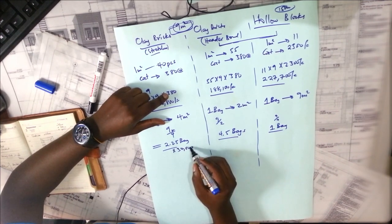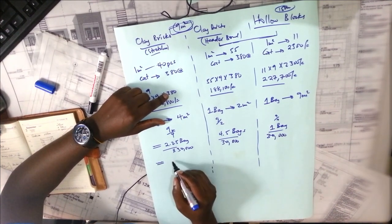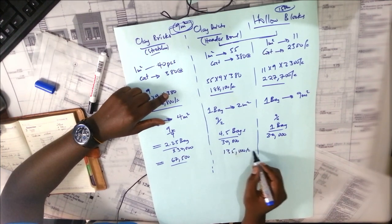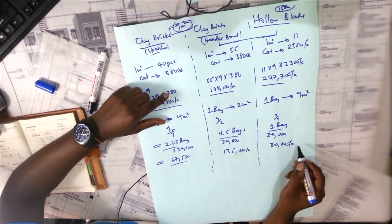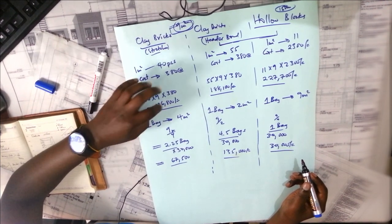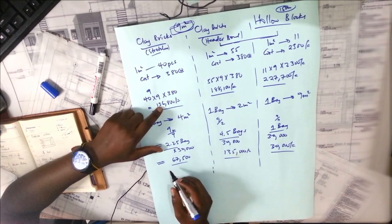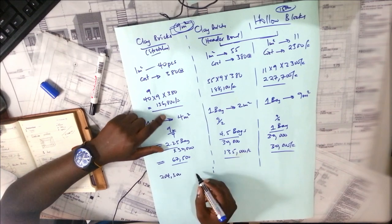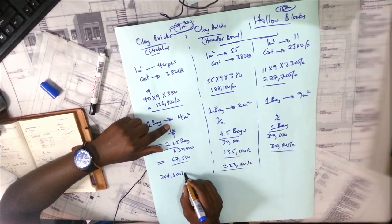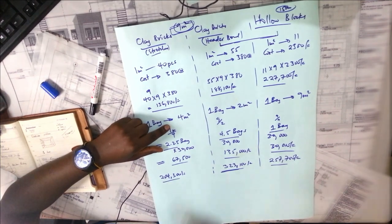Assuming one bag of cement costs 30,000 shillings: for stretcher bond, cement costs 2.25 × 30,000 = 67,500 shillings; for header bond, 4.5 × 30,000 = 135,000 shillings; for hollow blocks, 1 × 30,000 = 30,000 shillings. Adding cement costs to block/brick costs: clay bricks stretcher bond total = 136,800 + 67,500 = 204,300 shillings; header bond total = 188,100 + 135,000 = 323,100 shillings; hollow blocks total = 227,700 + 30,000 = 257,700 shillings.